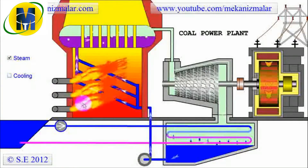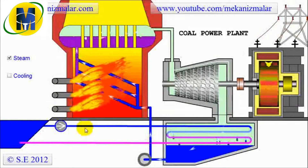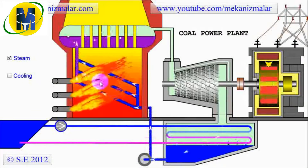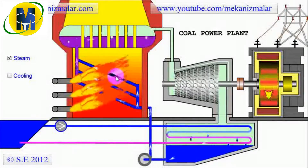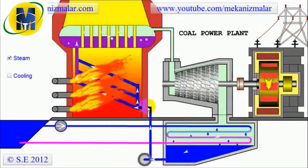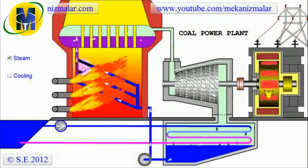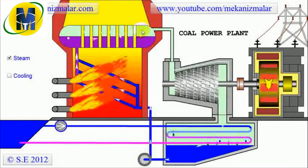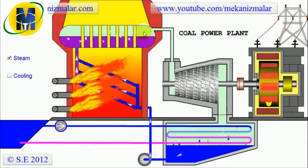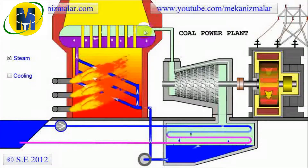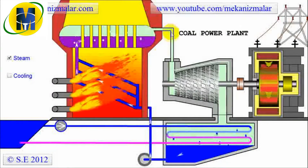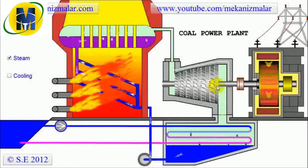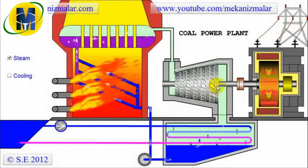Let's begin by describing the closed loop power cycle, or the steam cycle, starting from the furnace. First, intense heat inside the furnace heats the water within the coils, which is coming from the condenser. This heated water is forced to the boiler where it evaporates. The pressure inside the boiler can be more than 200 bars. The high pressure steam obtained in the boiler is sent to the steam turbine, which passes the steam between fixed and rotating sections, converting the energy stored in the steam to mechanical energy.